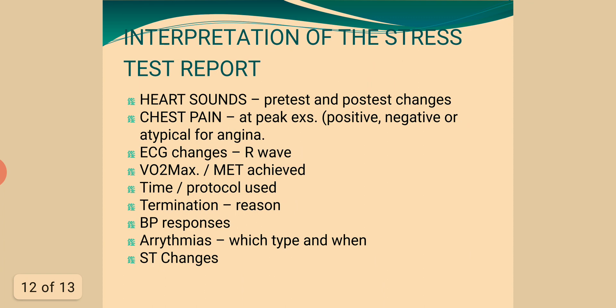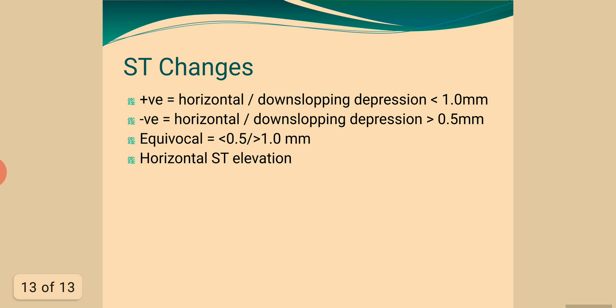Interpretation of the stress test report includes: heart sounds, pre-test and post-test changes, chest pain at peak exercise (positive, negative, or atypical for angina), ECG changes, R-wave, VO2max or METs achieved, time and protocol used, reason for termination, blood pressure responses, arrhythmias (type and timing), and ST segment changes. ST segment changes are classified as positive (horizontal or down-sloping depression of 1.0 mm or more) or equivocal (less than 0.5 mm or 0.5 to 1.0 mm).